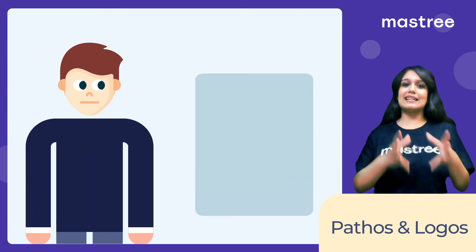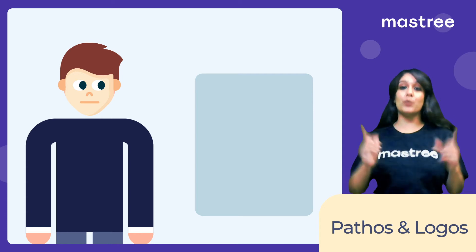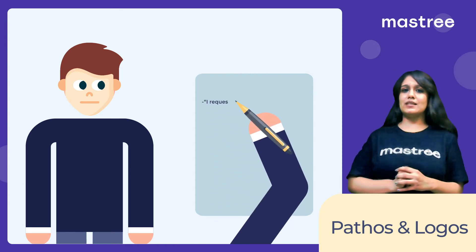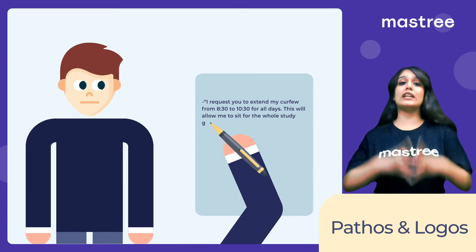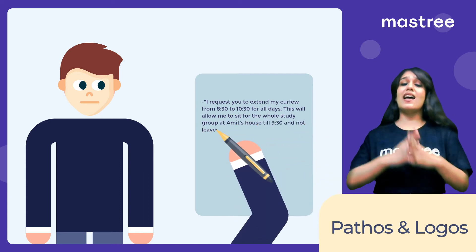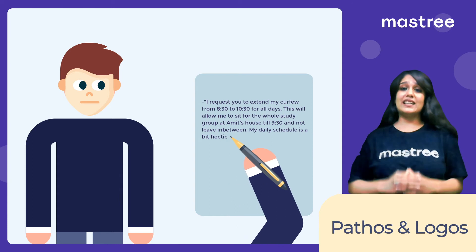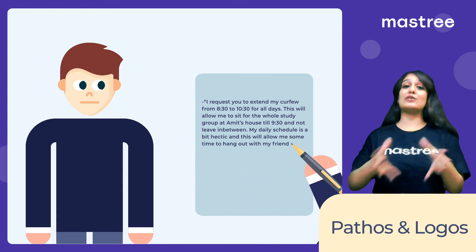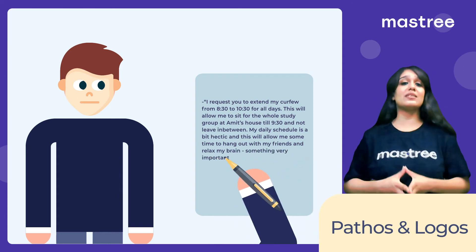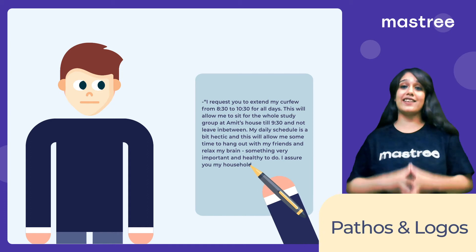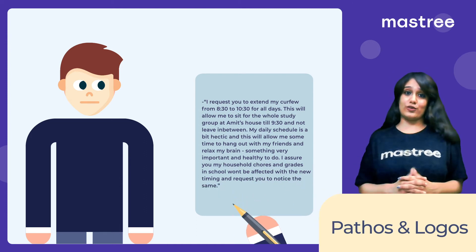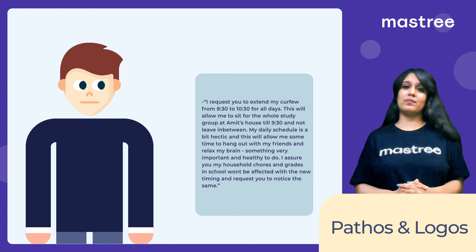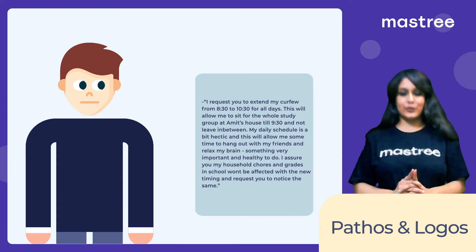Coming back to Adam's note and his curfew timings, let's see what facts and details we can add to his note to make it more convincing. Maybe something like this: 'I request you to extend my curfew from 8:30 to 10:30 PM for all days. This will allow me to sit for the entirety of the study session at Amit's house and I won't have to leave in the middle of it. My daily schedule is a bit hectic and the extension would allow me to study, hang out with my friends, and even have some relaxation time, which is very important and healthy. I assure you that the change in my timings would not interfere with my grades or household chores. I hope you consider my request.' I think Adam did a good job here, don't you guys think so too?